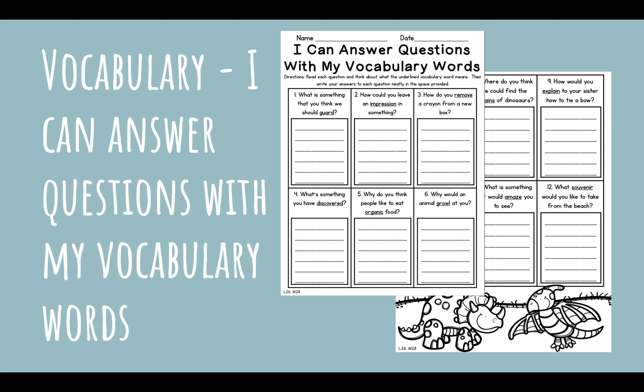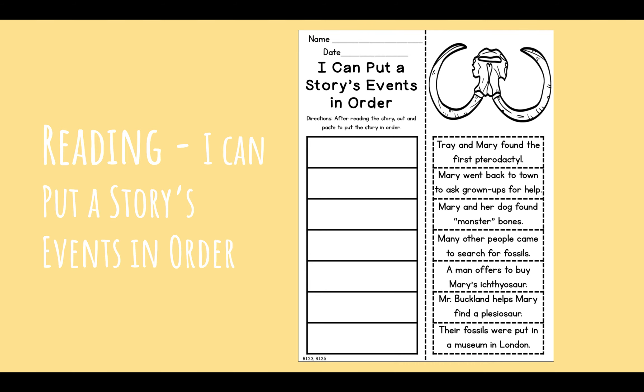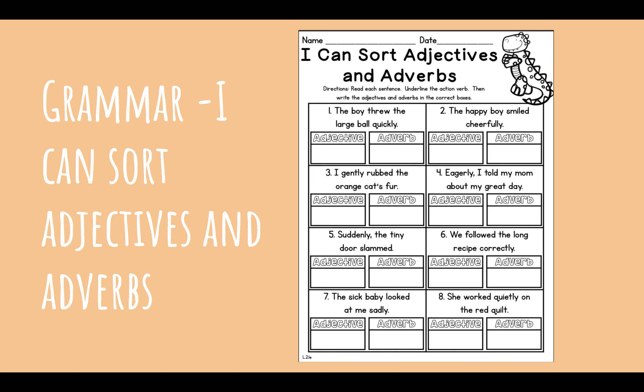Next, you will have a vocabulary lesson. The objective is: I can answer questions with my vocabulary words. Then for reading, the objective is: I can put a story's events in order. I know that it shows you're supposed to cut and paste, but because we are printed on both sides, I would just copy the box and write it inside of the box in order. If you really need to, I suggest you either ask someone if you can copy it, or go ahead and cut it and we can figure it out from there.